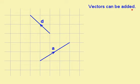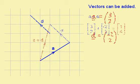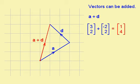I can add vectors in two ways: using the diagram or using column vectors. When I add two vectors together graphically, I draw them nose to tail like this. We can see that going from here to here, and then to here, is the same as going from here to here. This is called the resultant vector. On an exam paper it would be shown with a double arrow.